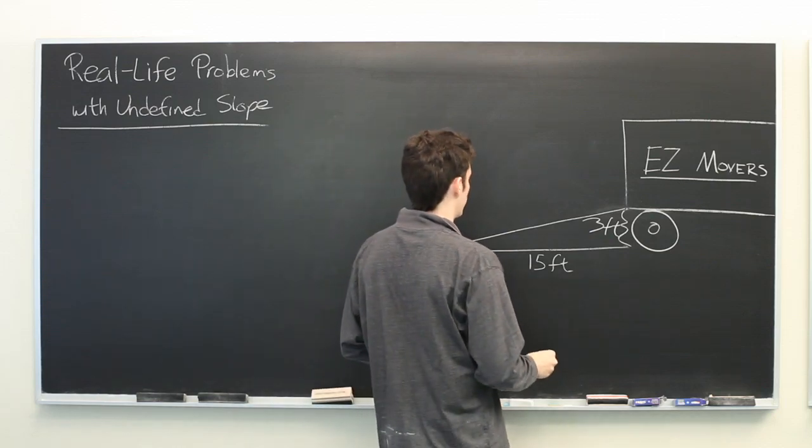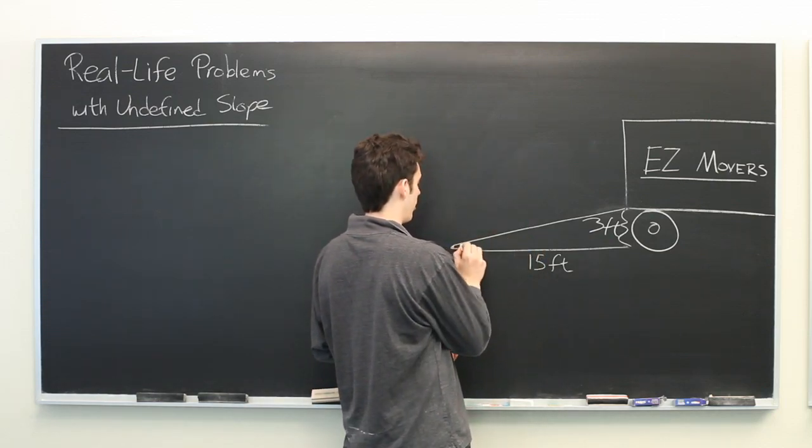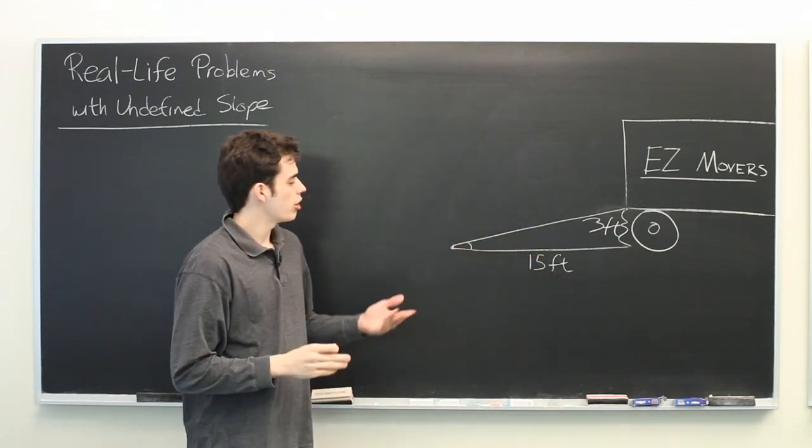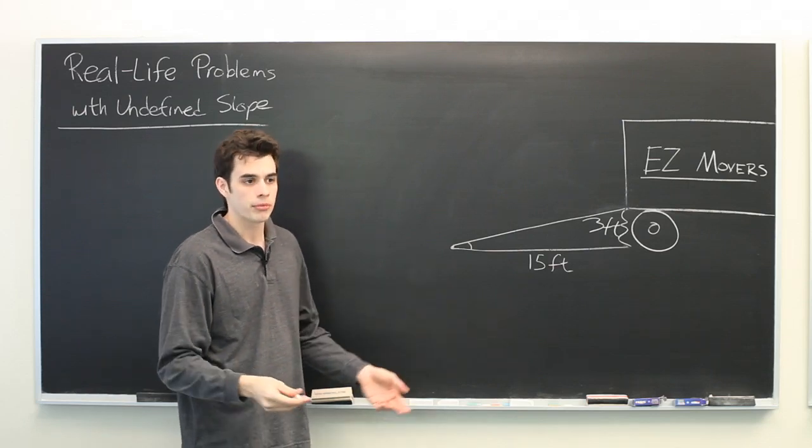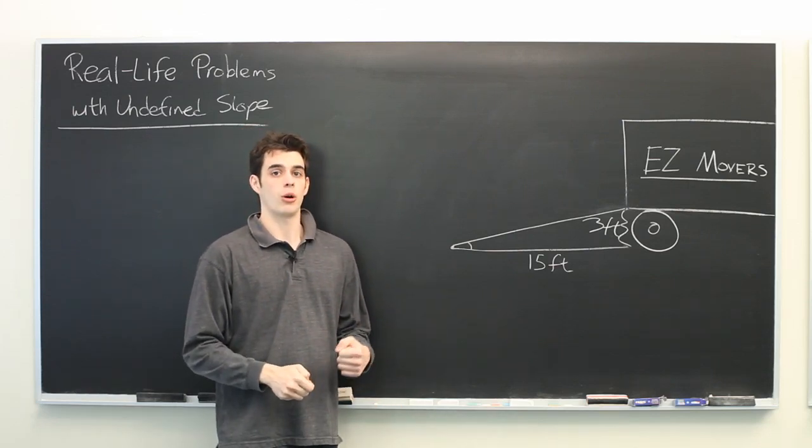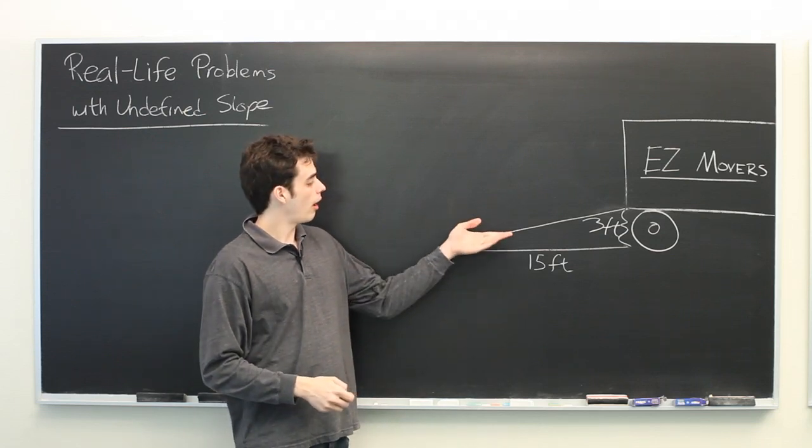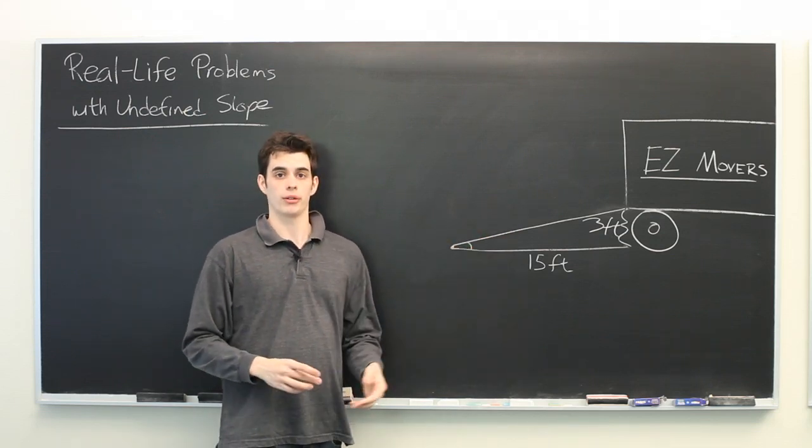Our question is, what is the slope of this ramp? This might be relevant if, for example, the movers are using a hand cart that is only rated to be used on a ramp with a slope below a certain value.